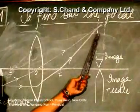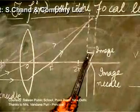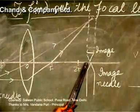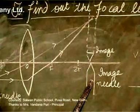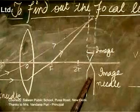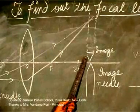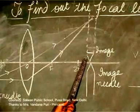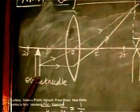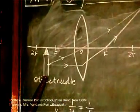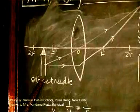I can only see this image in order to locate it and find out its position on the meter scale. I use this image needle and keep adjusting it until the tip of it is exactly in line with the image tip. After doing the experiment for different values of the object distance, I will be getting different image distances.